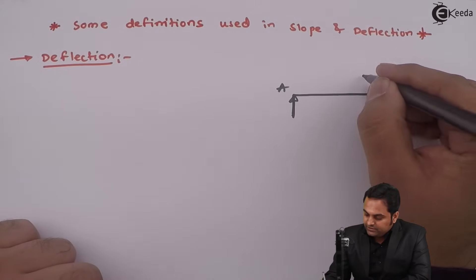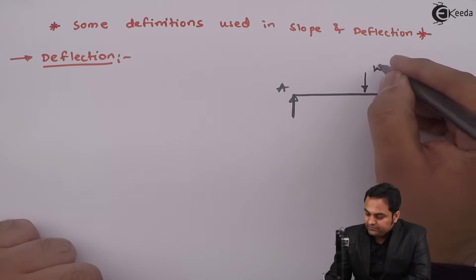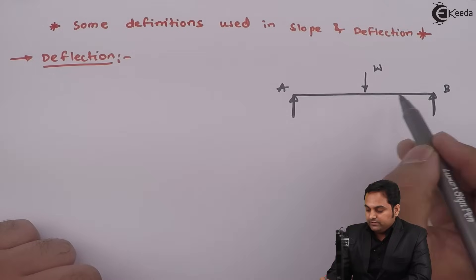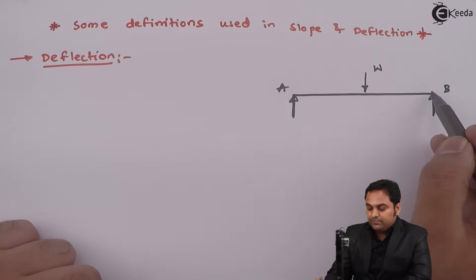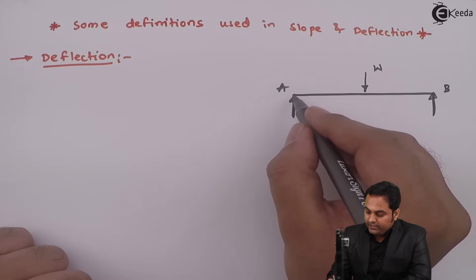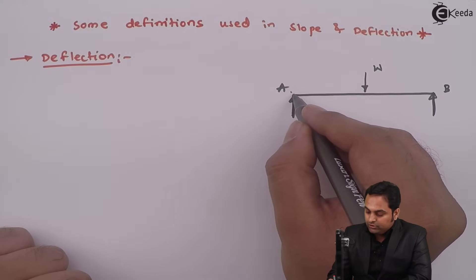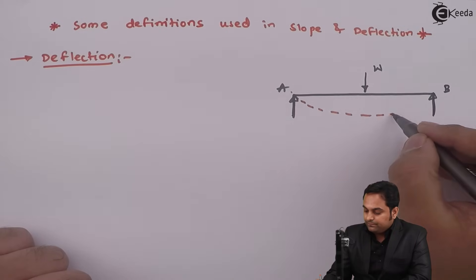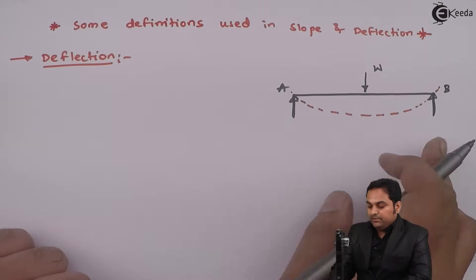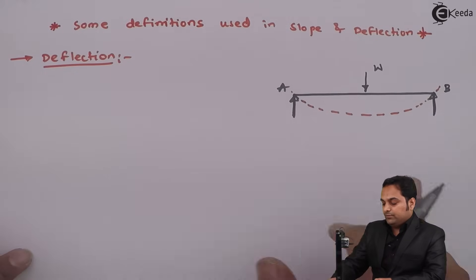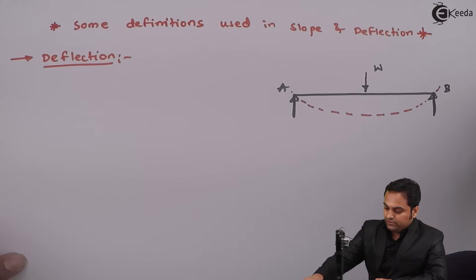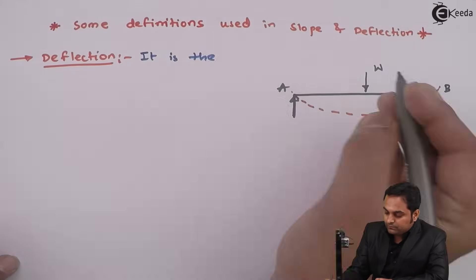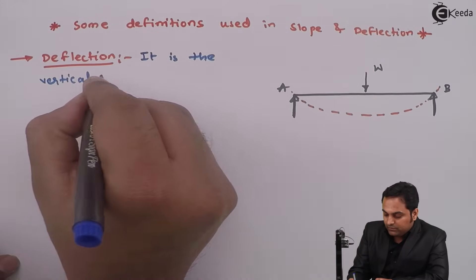Suppose there is a load acting at the center of this beam. Under the action of this load, the shape of the beam is going to change. I am considering the beam as elastic, so when the load is acting the beam will deflect, and when the load is removed the beam will come back to its original position. The first definition is deflection — it is the vertical distance